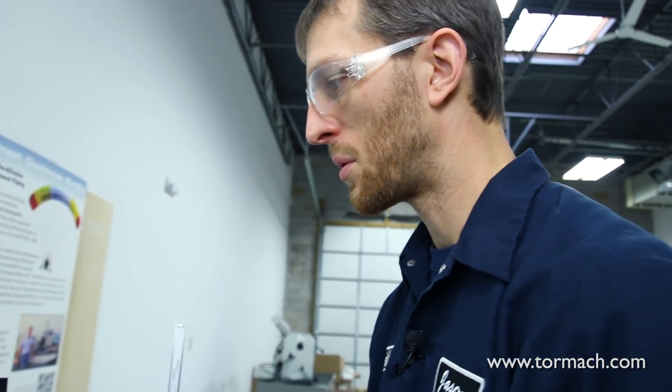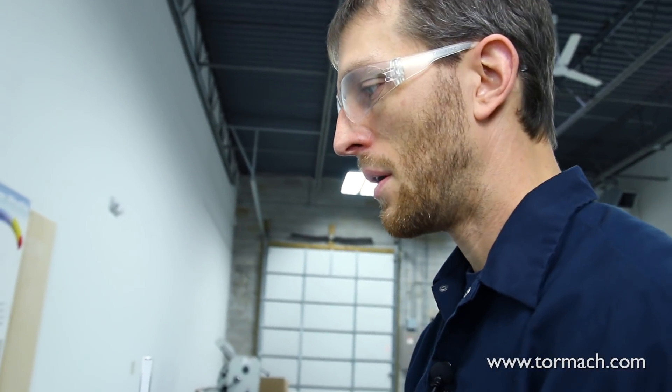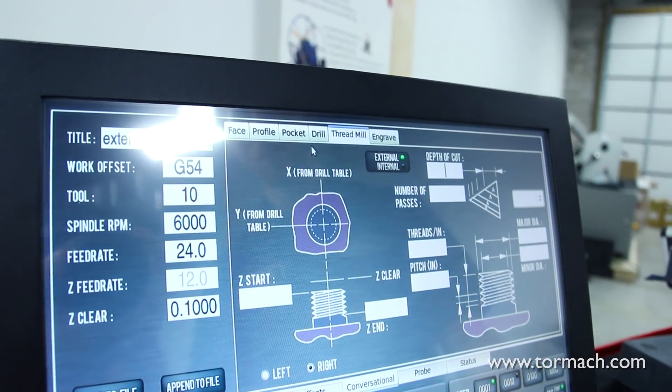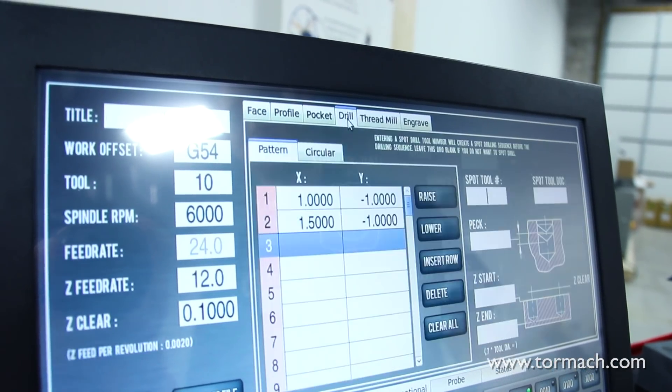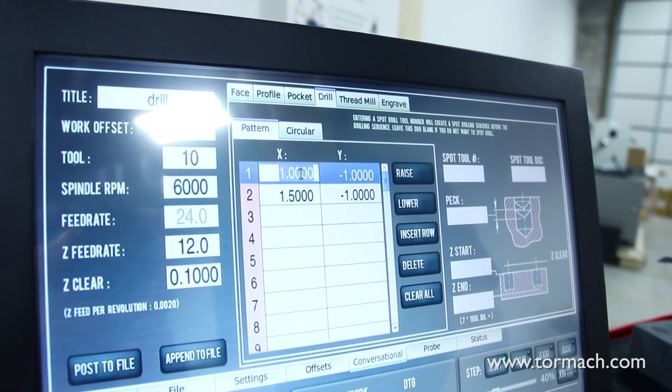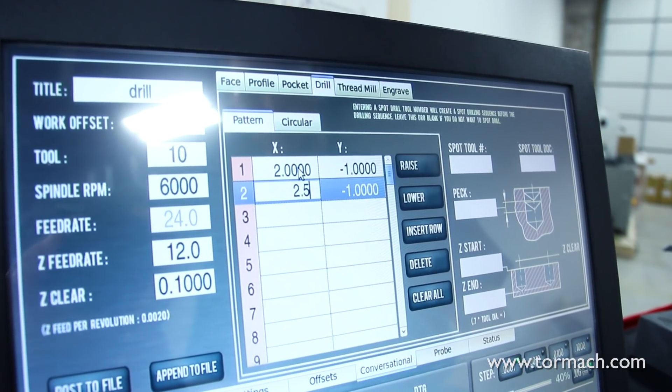It's a little bit of an off-road approach, a little unconventional, but I've always found that it works really well for me. This function is similar to the pocketing routine. It still uses the position from the X and Y drill table. We'll go ahead and update these quick. We'll start at two inches and go to two and a half inches this time.